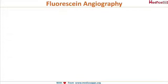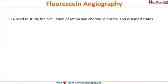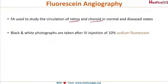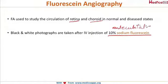Fluorescein angiography is used to study the circulation of the retina and choroid in both normal and diseased states. We take black and white photographs after an IV injection of 10% sodium fluorescein, which is injected into the antecubital vein of the patient, and then we take black and white photographs of the fundus.